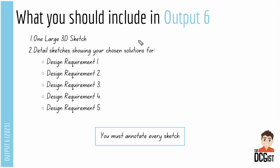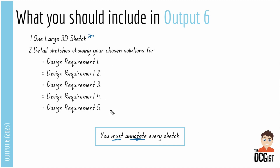Practically, what should you include in output 6? You absolutely need one large 3D sketch as discussed. Then you're going to have detailed sketches showing your chosen solutions for design requirements 1, 2, 3, 4, and 5. The reason for those is to give detailed communication of your concept design — without them, one large 3D sketch alone wouldn't show enough detail for somebody to fully understand your design. You must absolutely annotate every single sketch you do, annotating your large 3D sketch and all five others, so you can communicate your design to the best of your ability.